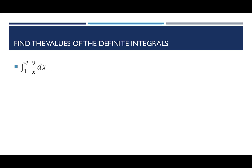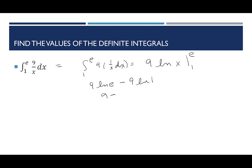Next, the integral from 1 to e of 9/x dx. It helps to rewrite as 9 times (1/x) dx. Remember that 1/x becomes ln. So I have 9 times the natural log of x from 1 to e. I didn't write absolute value because e and 1 are both positive. So: 9 ln(e) minus 9 ln(1). The natural log of e is 1, so 9 times 1 is 9; ln(1) is 0. 9 minus 0 gives us 9.